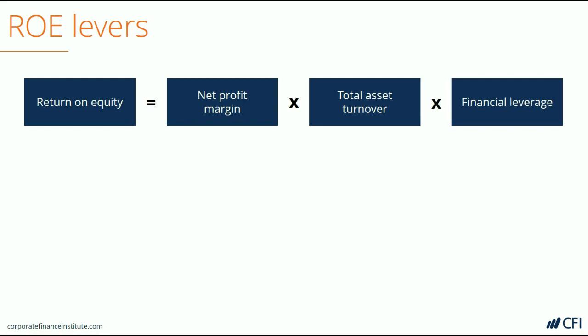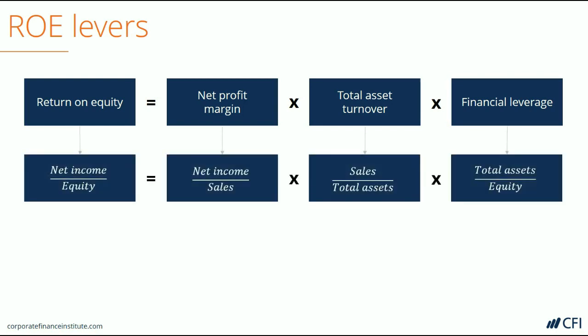If you look at the formulas for the three ratios and consider how to multiply fractions, you will see that sales and total assets cancel each other out. This leaves us with our original formula of net income divided by equity, or ROE.